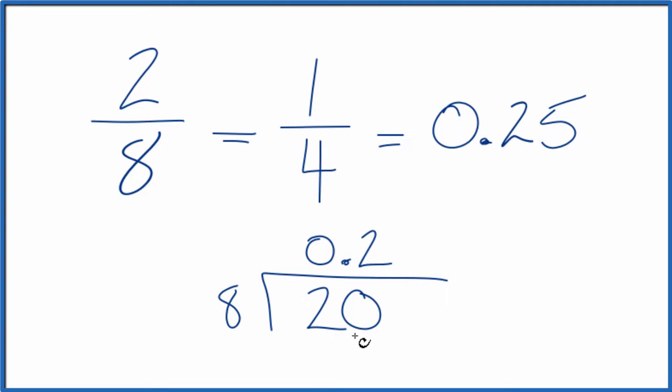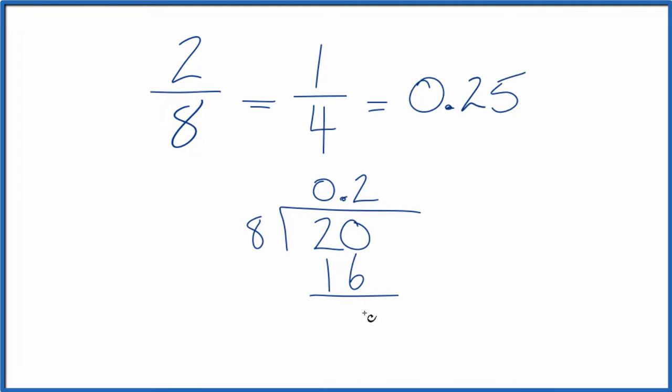So 2 times 8, that's 16, with 4 left over. We're going to call it 40. Move over here.